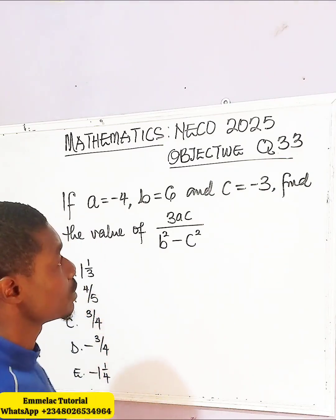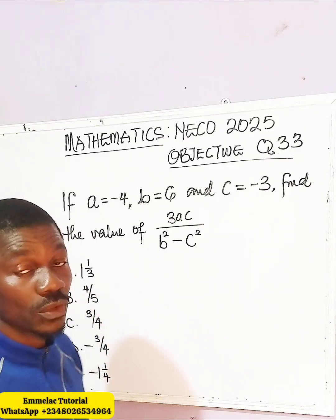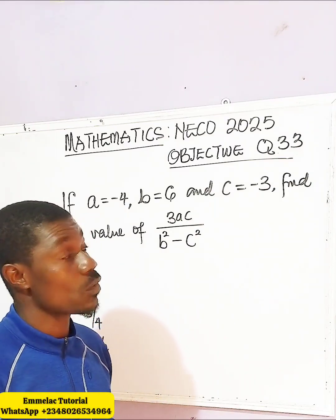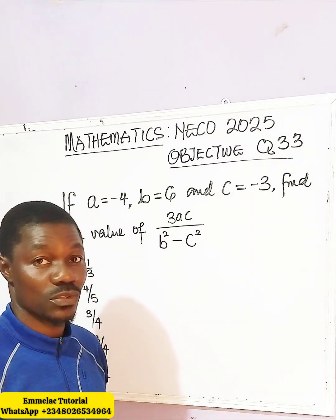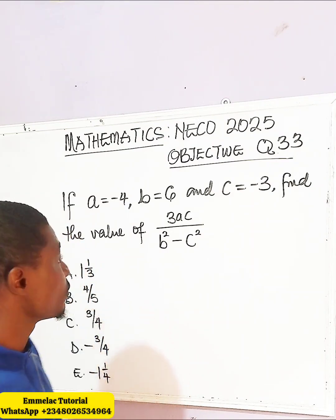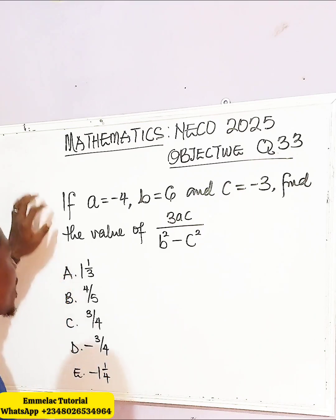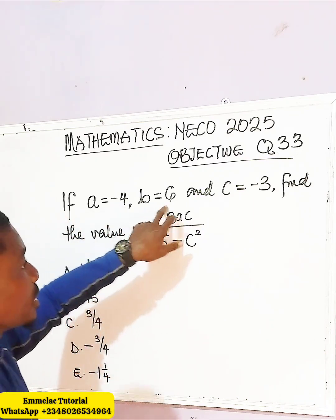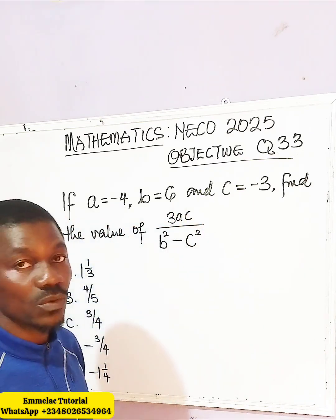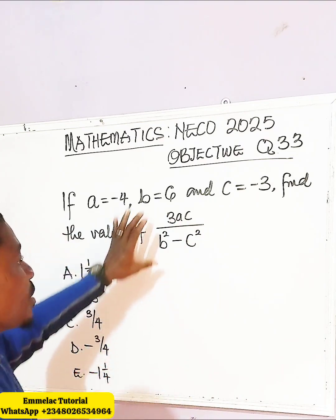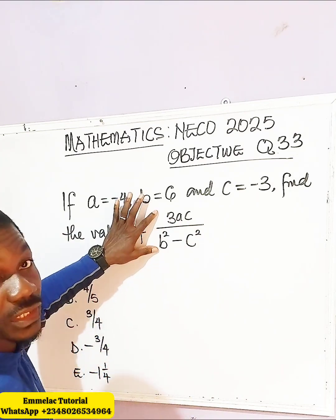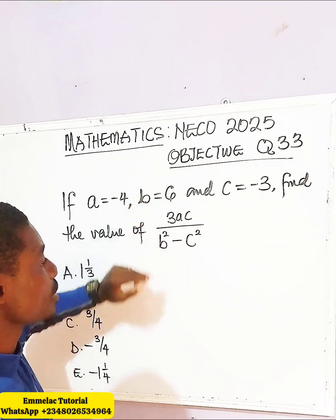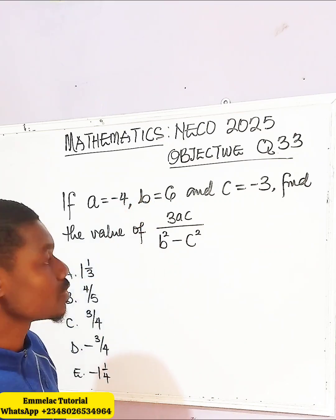Welcome to Emilia Conline Tutorial. Now let us look at question 33 of the NECO 2025 objective question. It says that if A equals negative 4, B equals 6, and C equals negative 3, find the value of the expression: 3A all over B squared minus C squared.